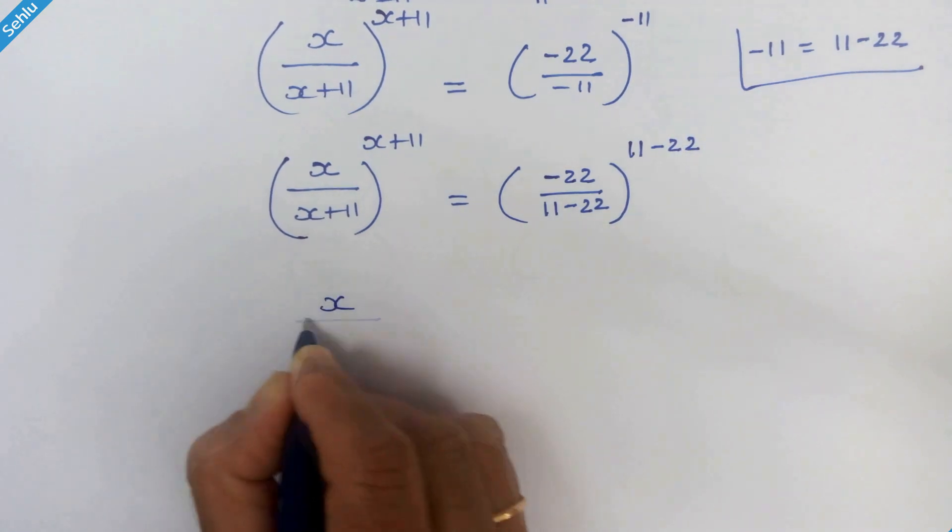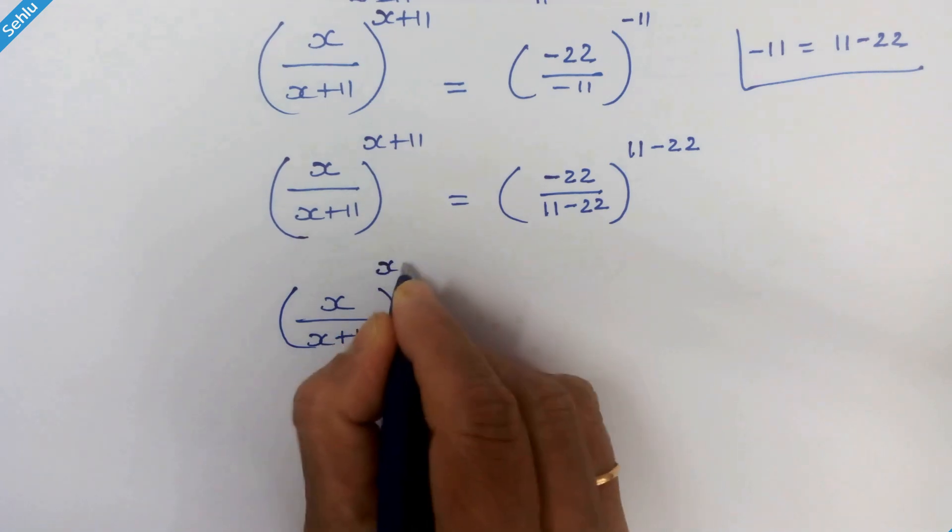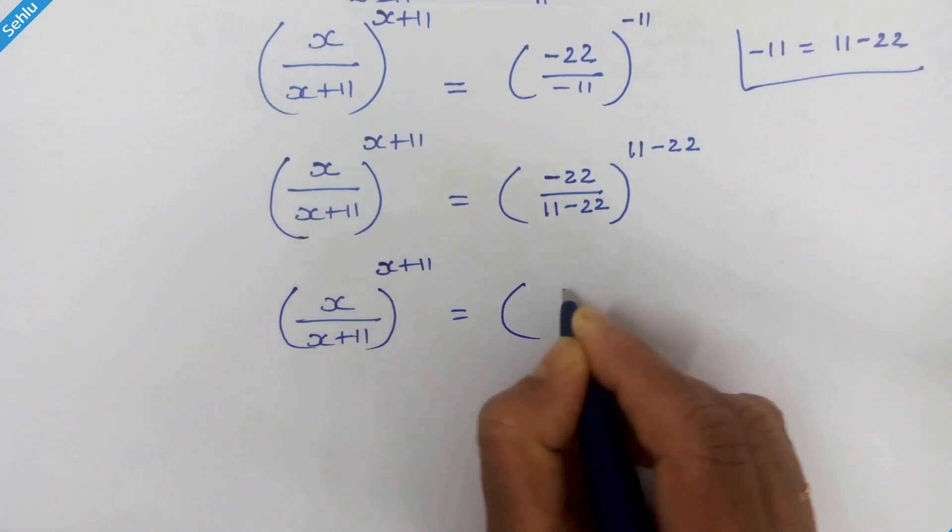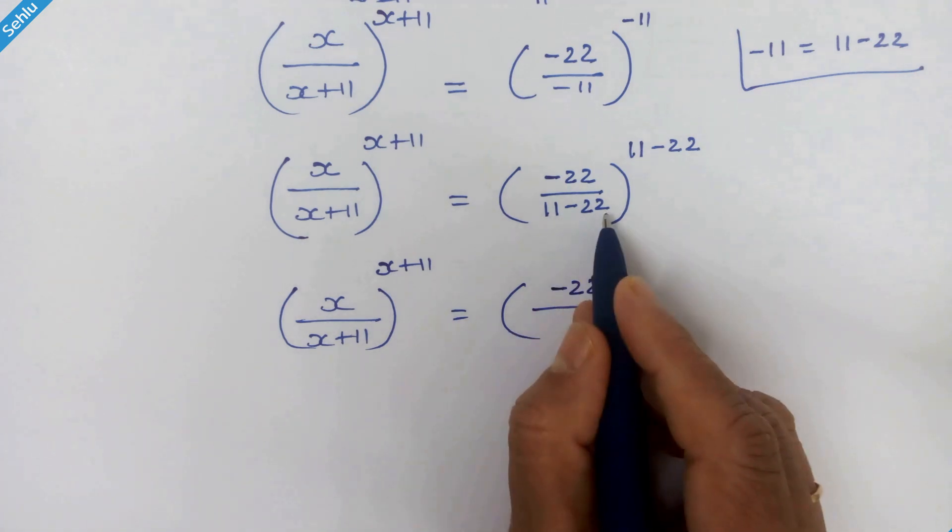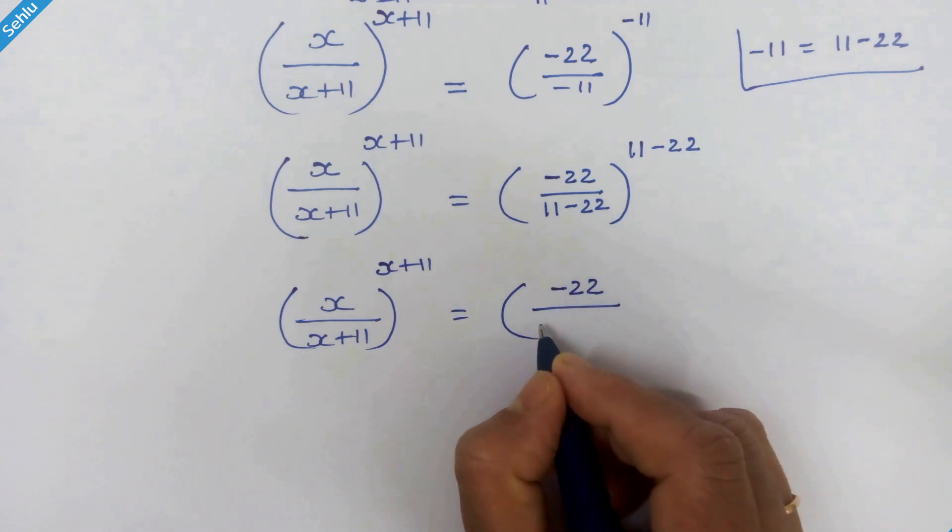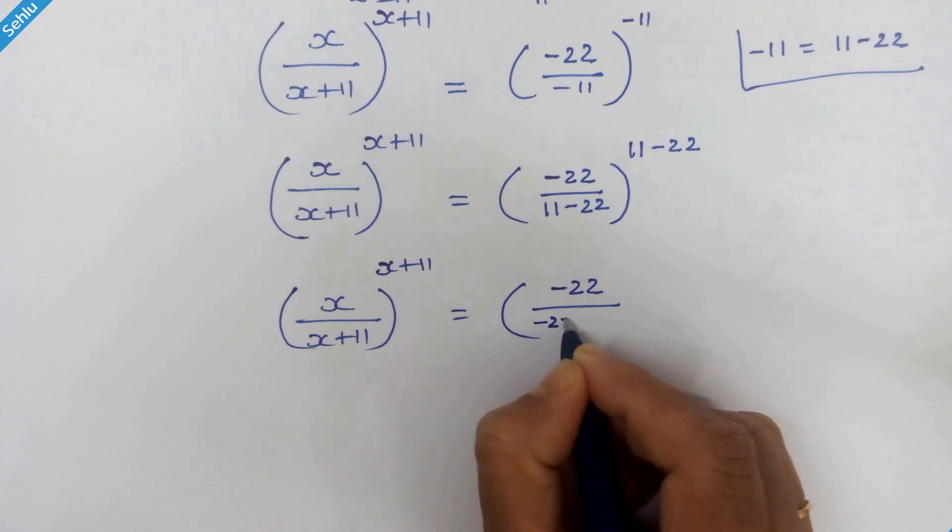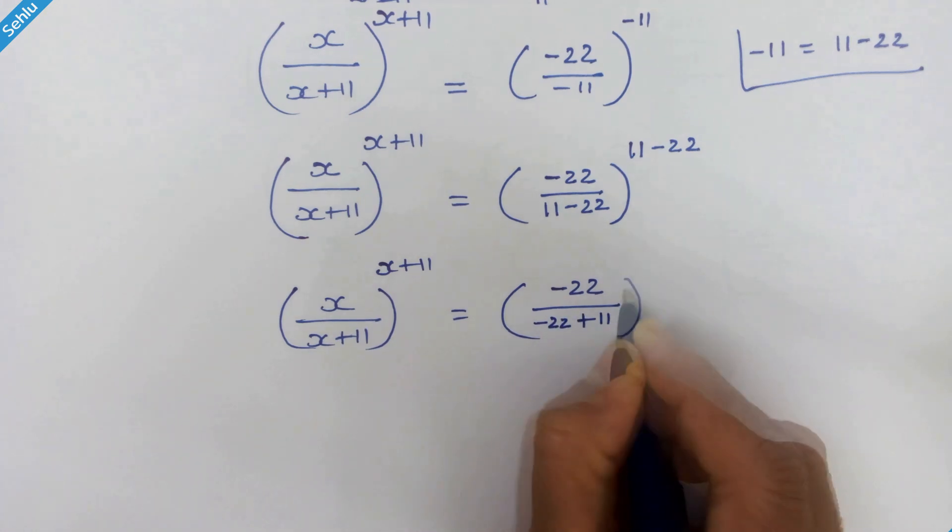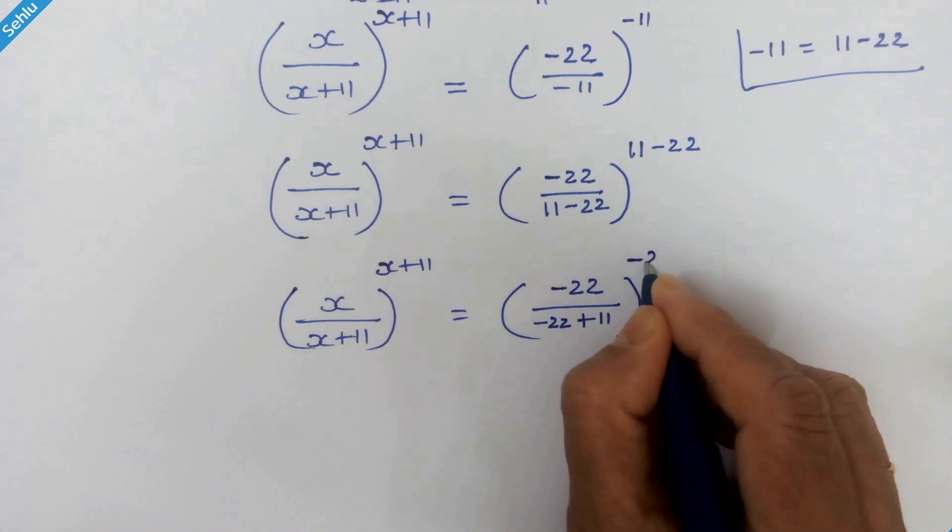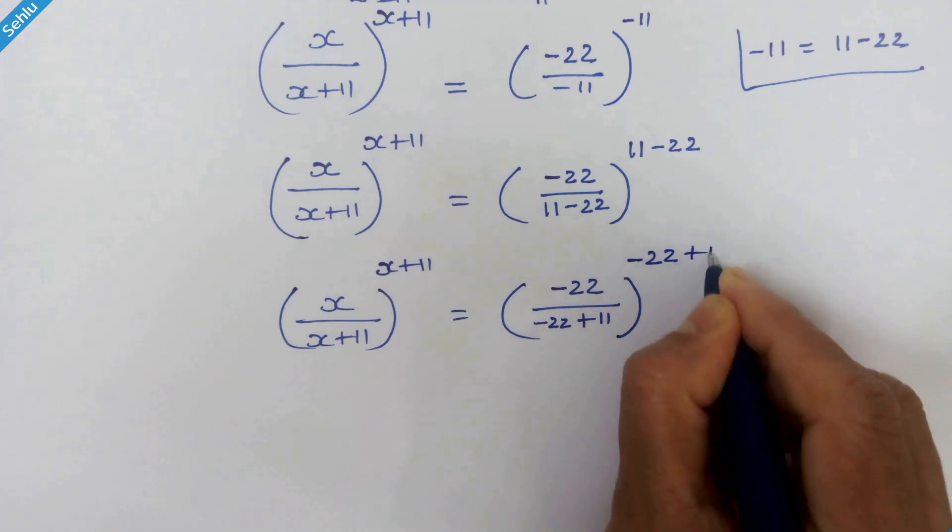Now in the next step is equal to minus 22 upon now 11 minus 22 is also written as minus 22 plus 11. So here we have minus 22 plus 11.